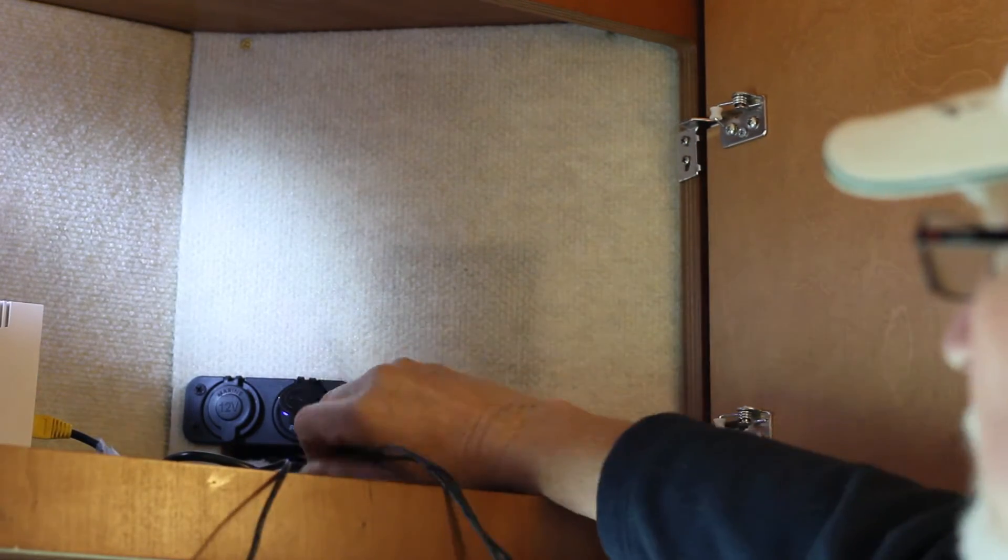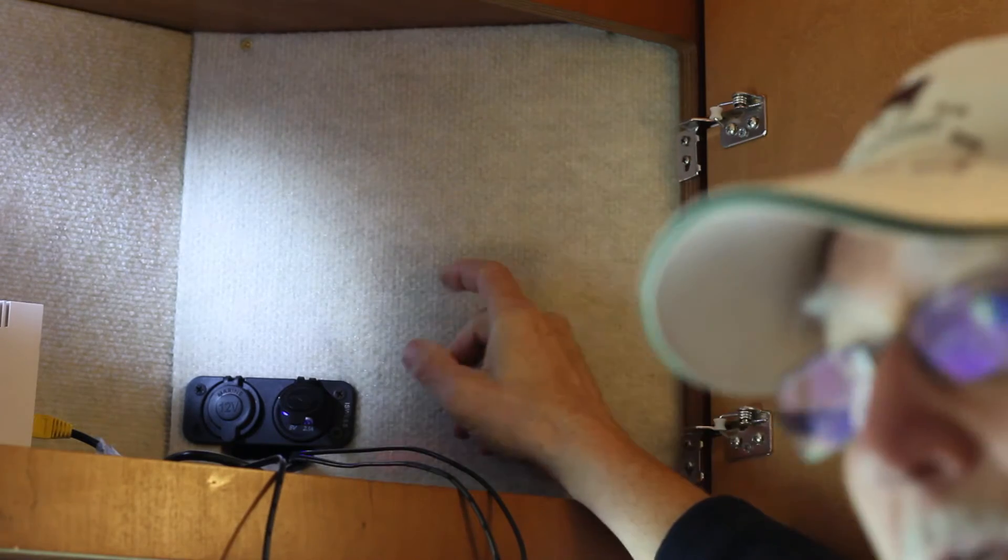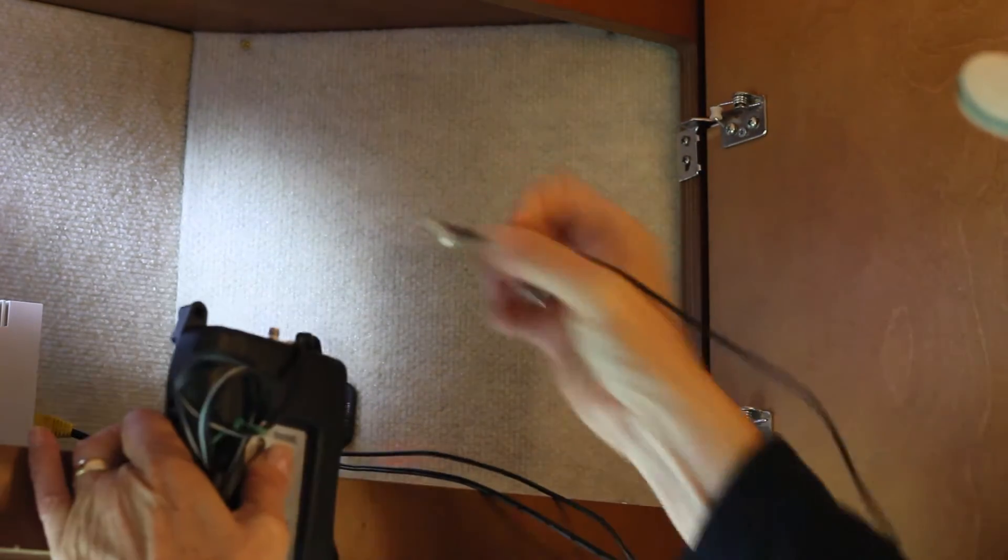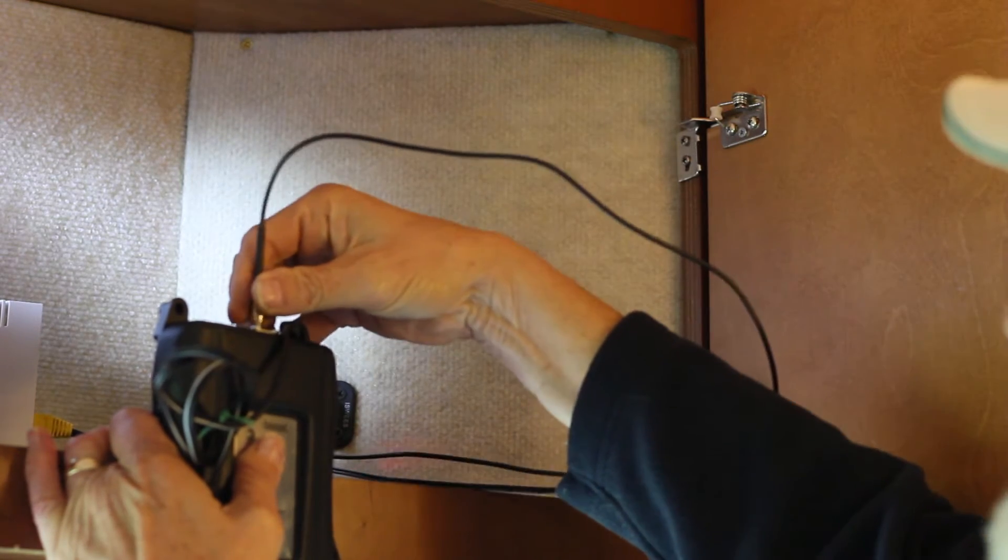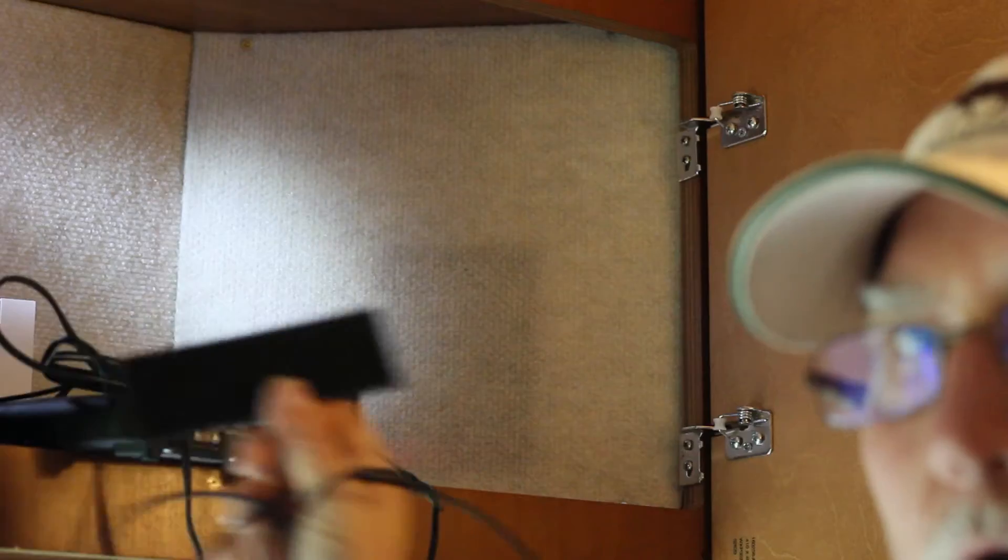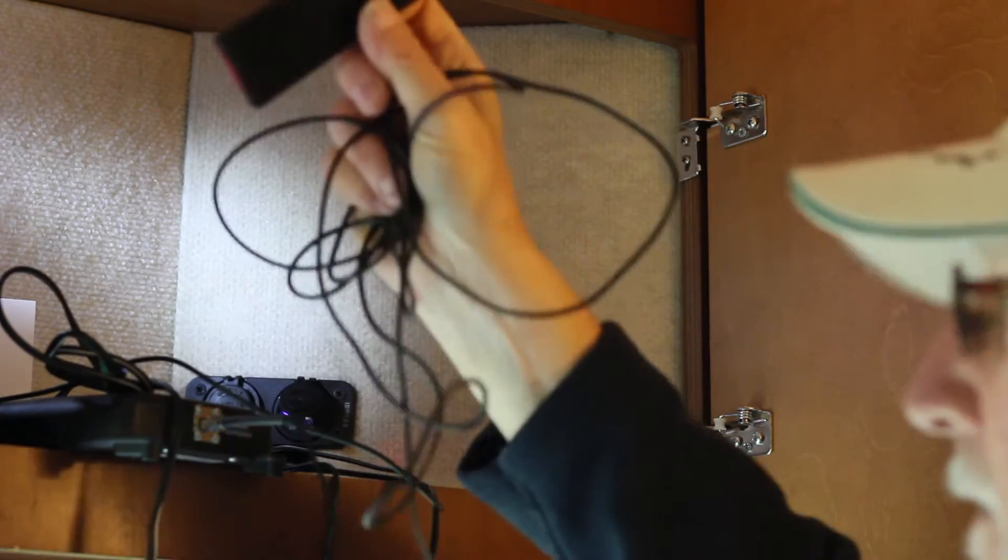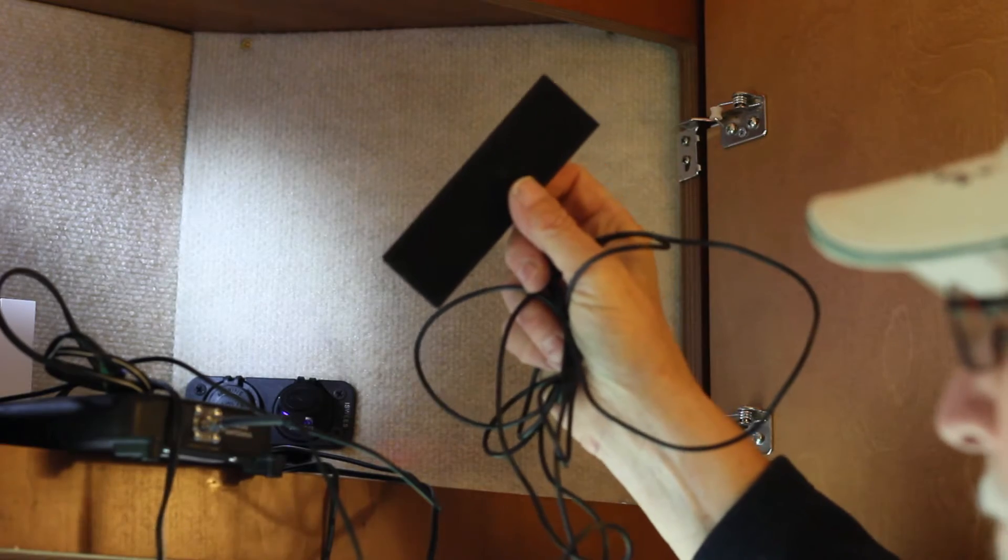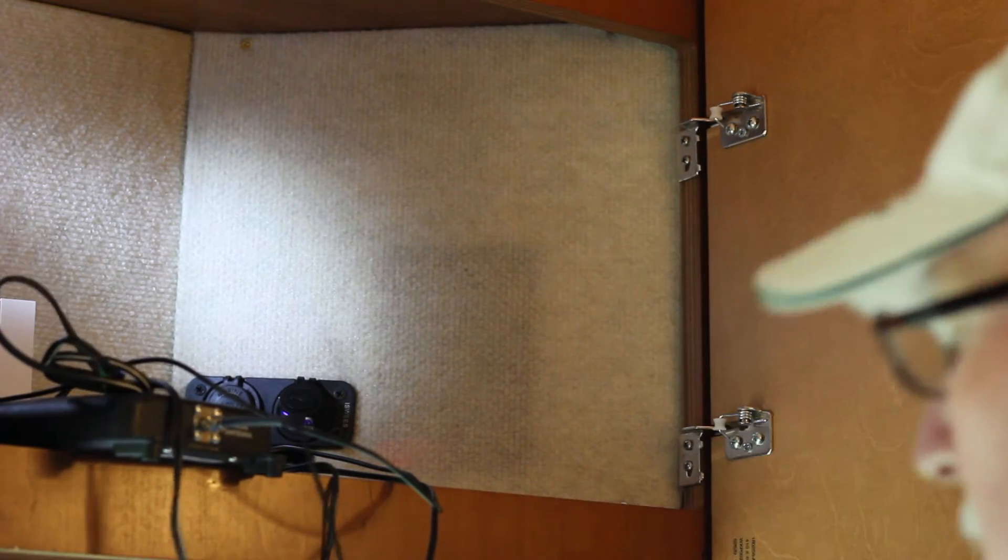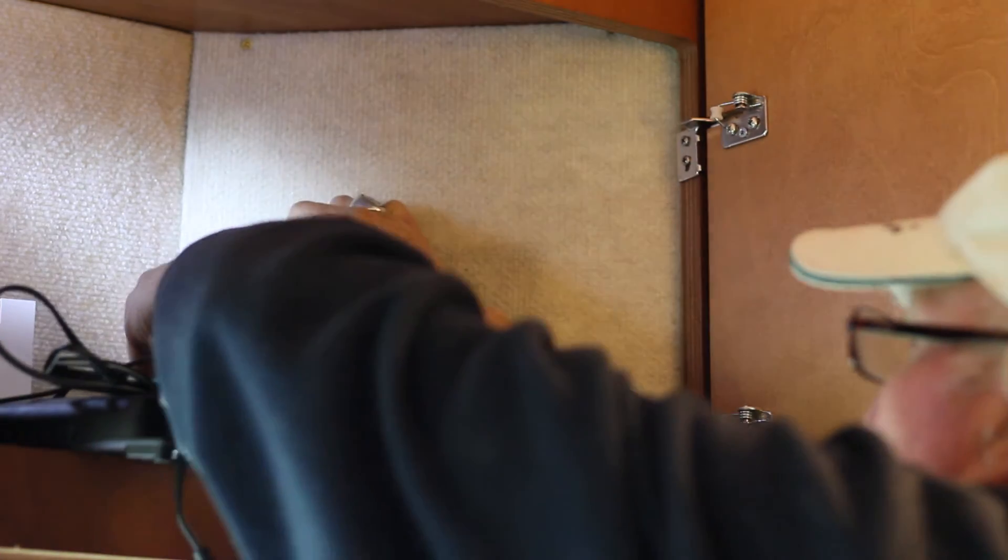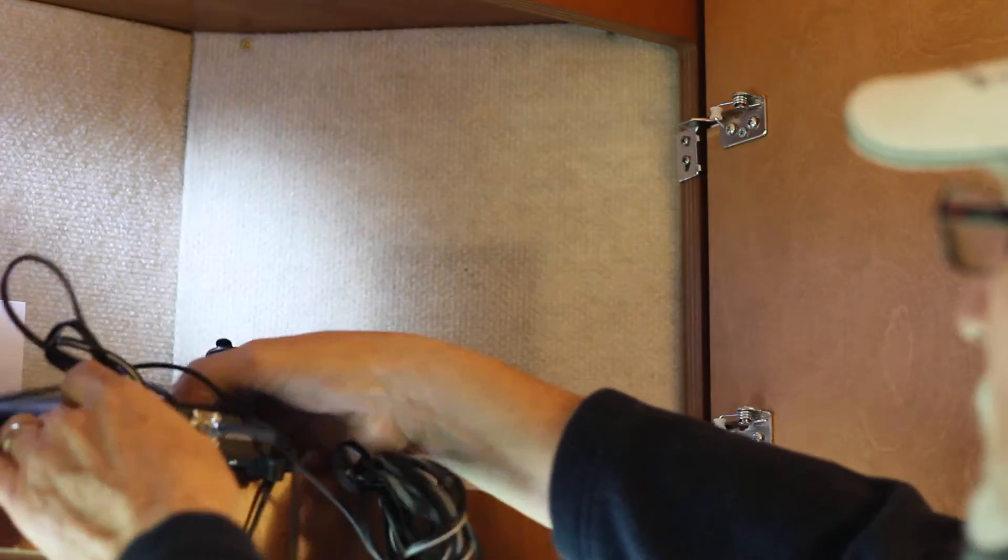Now for the WeBoost, we plug in the outside antenna that we routed into the WeBoost. We have the inside antenna on a cable here. I haven't decided exactly where to route that yet. Then we'll take the 12-volt connector and plug in the WeBoost.